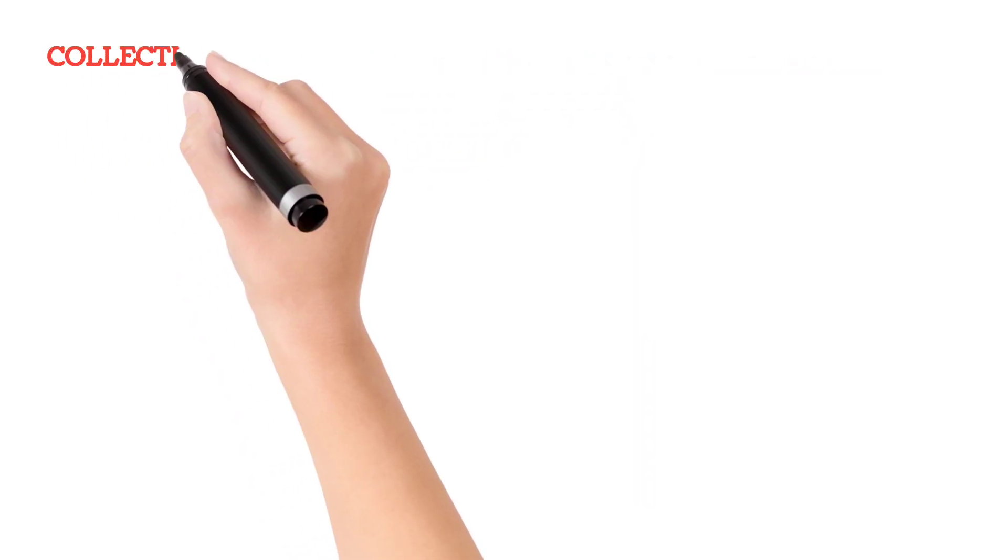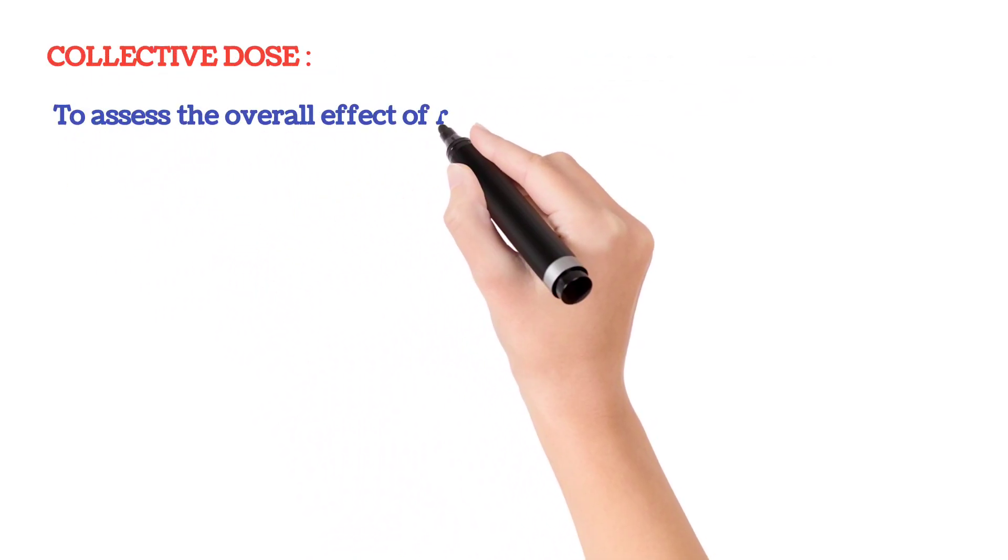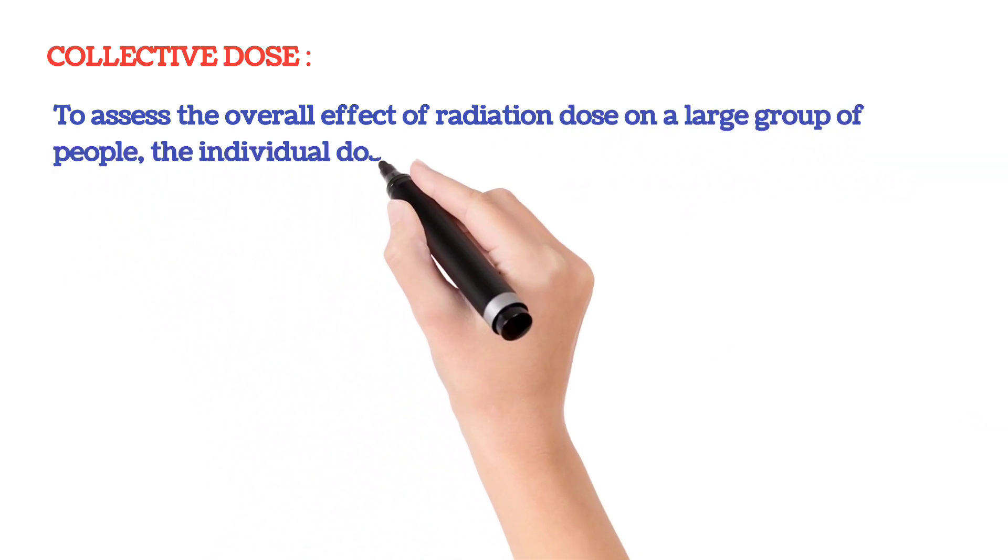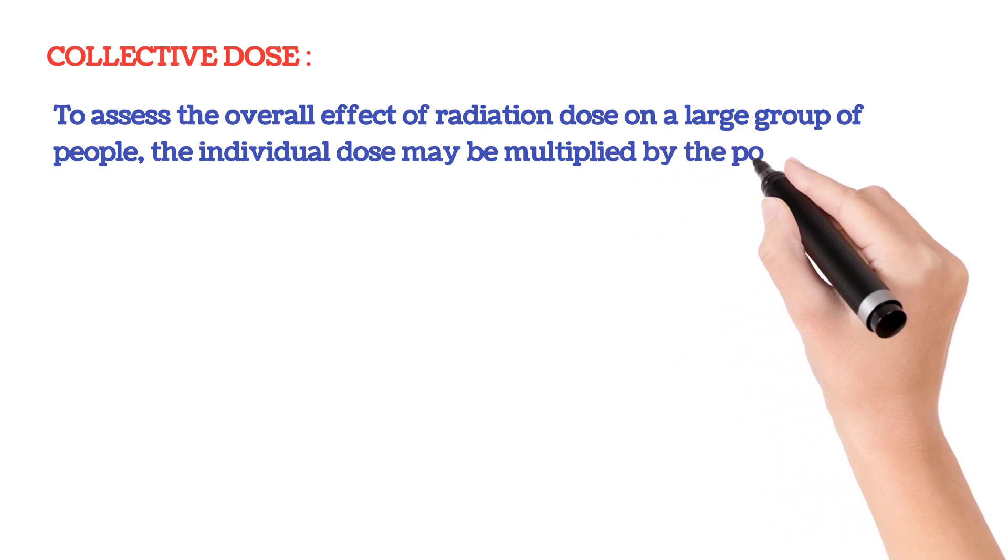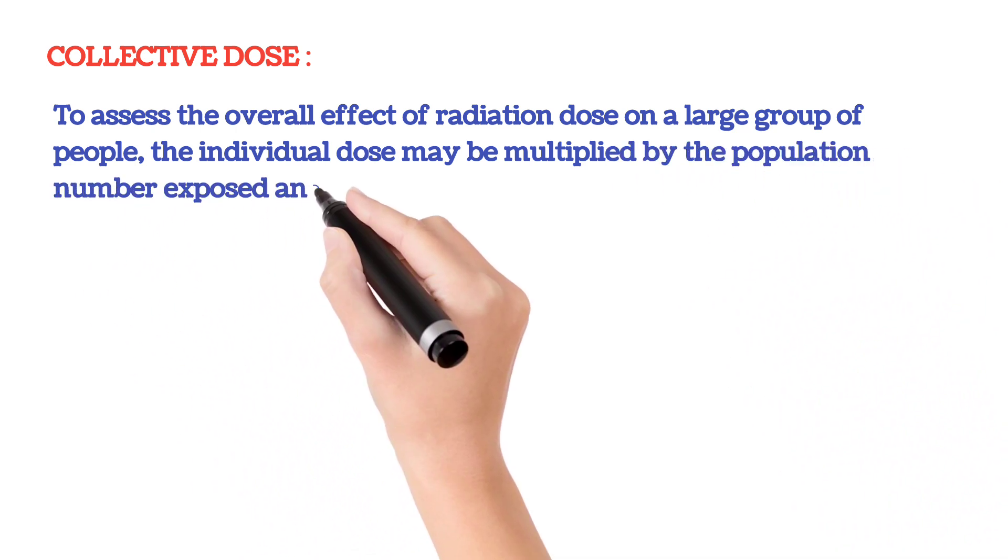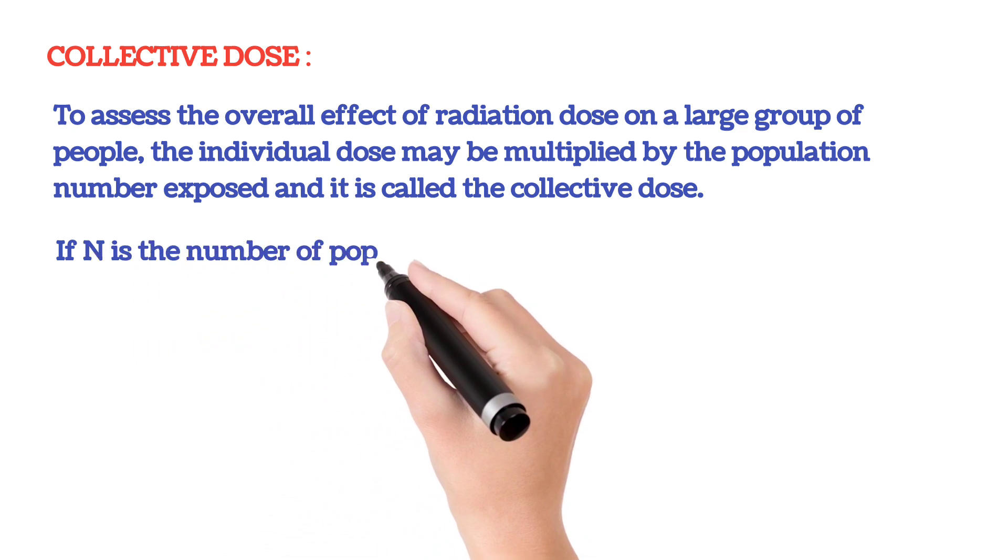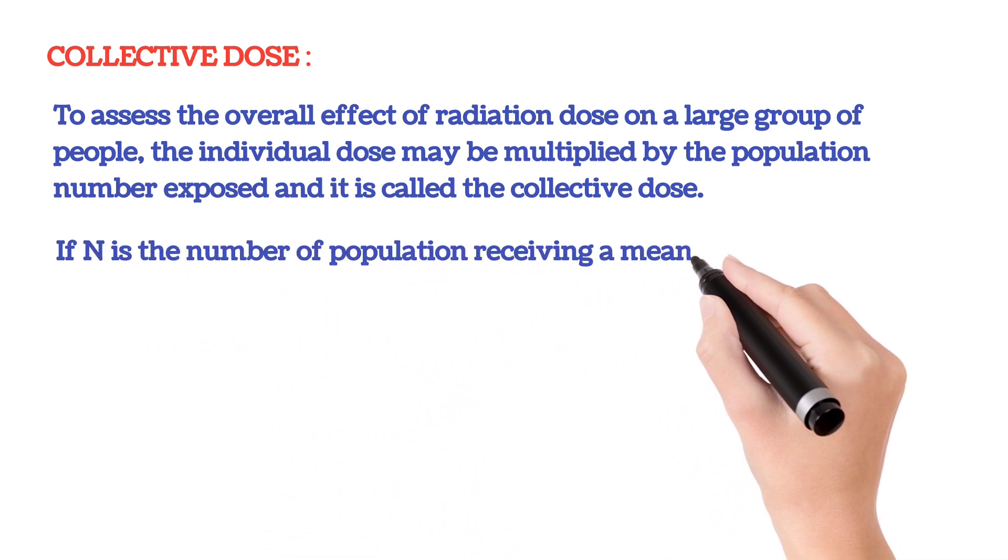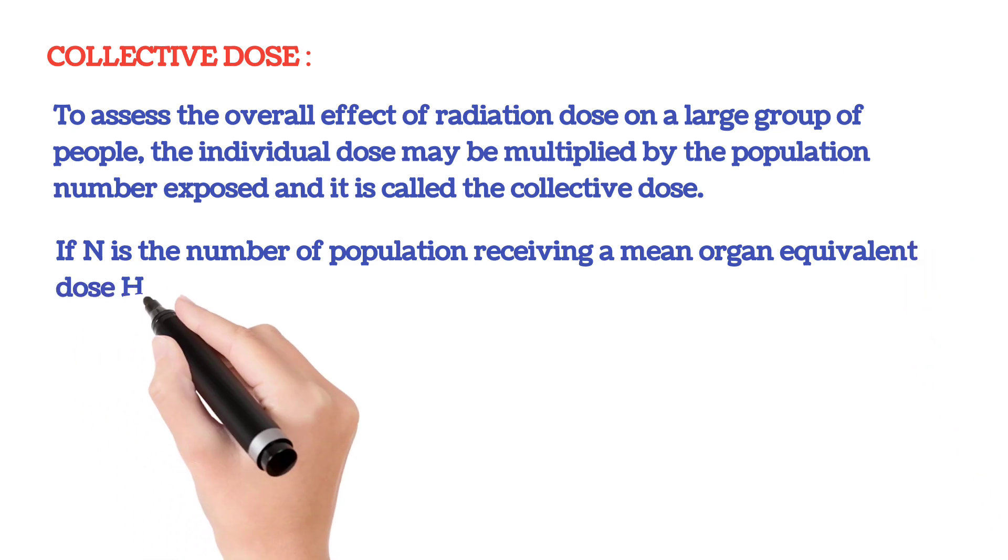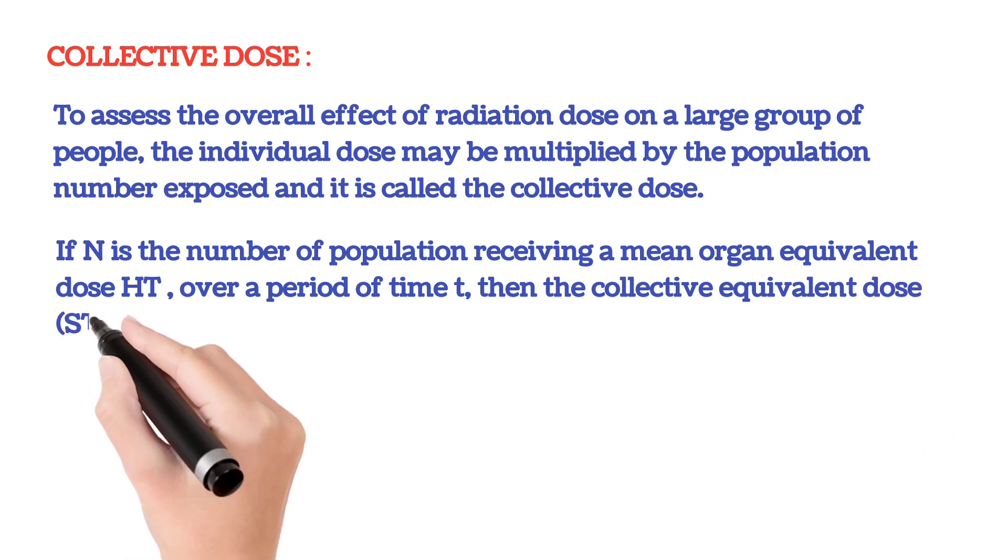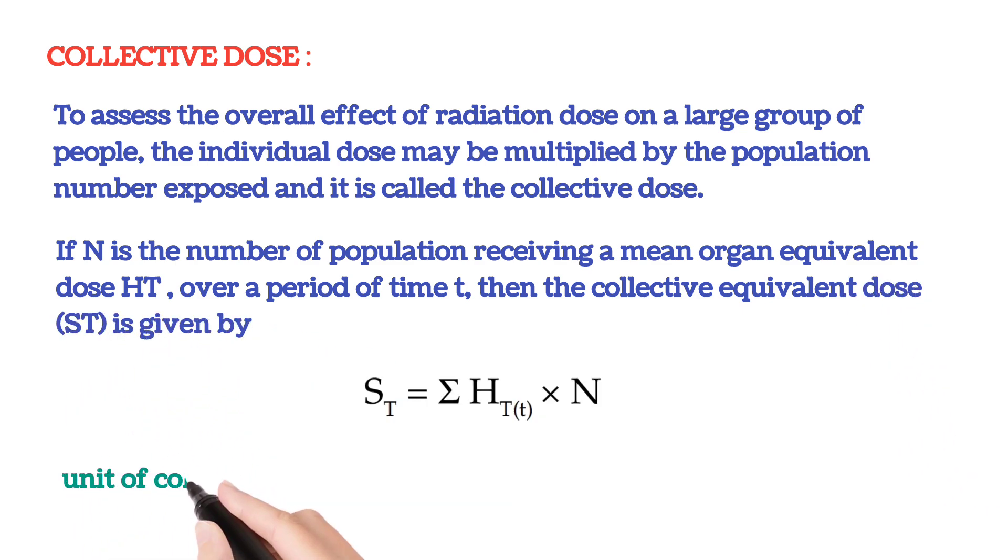Collective dose: to assess the overall effect of radiation dose on a large group of people, the individual dose may be multiplied by the population number exposed. It is called the collective dose. If N is the number of population receiving a mean organ equivalent dose over a period of time T, then the collective equivalent dose is given by mean organ dose multiplied by number of population. The unit of collective dose is person-sievert.